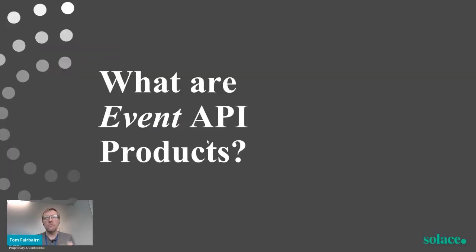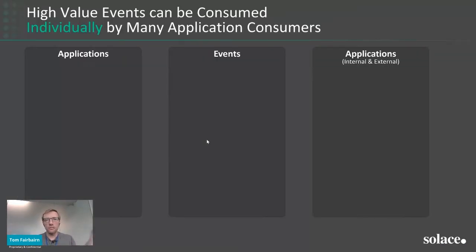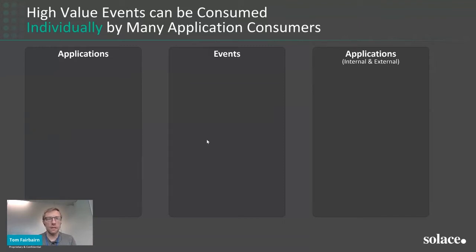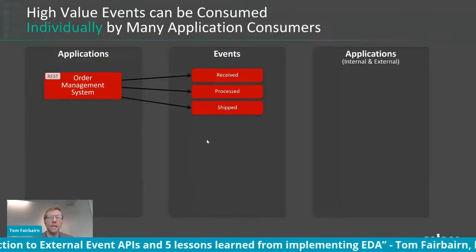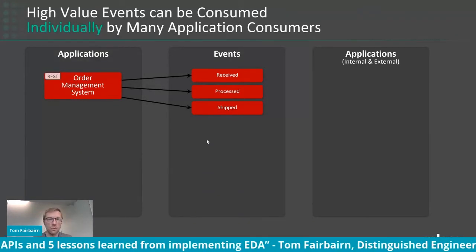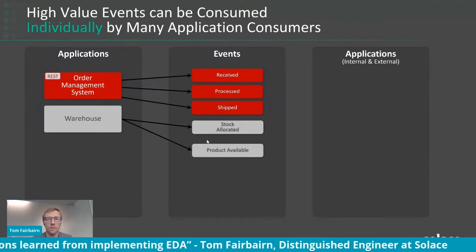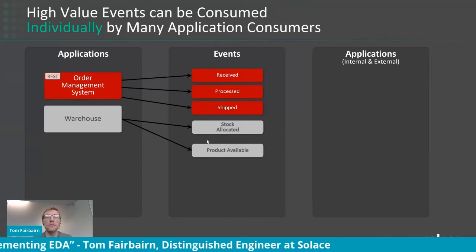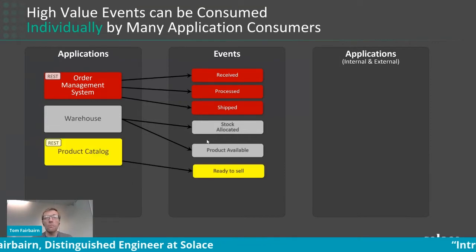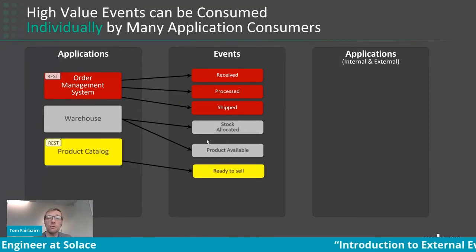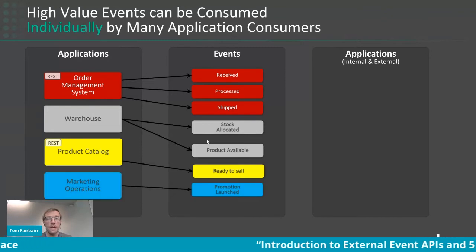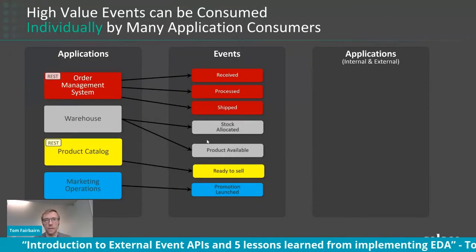Let's look at event API products — how we might manage and create them. Consider the producing applications: our order management system produces events like 'order received,' 'processed,' or 'shipped.' Our warehouse system may allocate stock or flag a product coming back into stock. A product catalog may have new or deprecated products. The marketing team may launch promotions. All of these events can be bundled into coherent products for consuming applications.